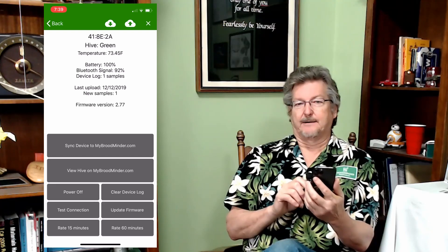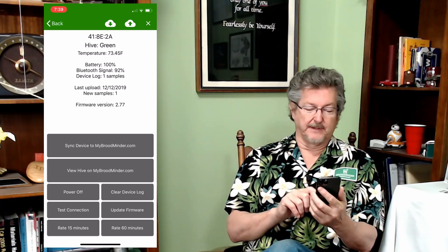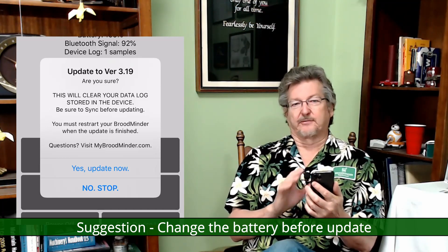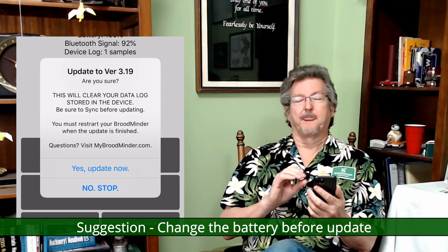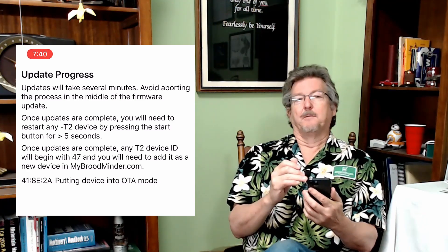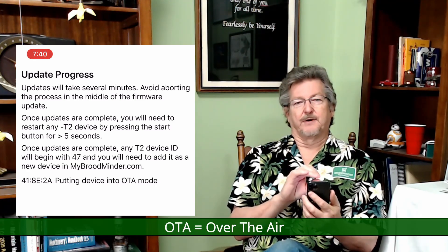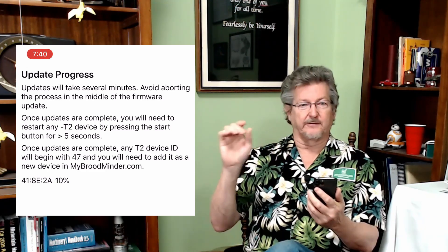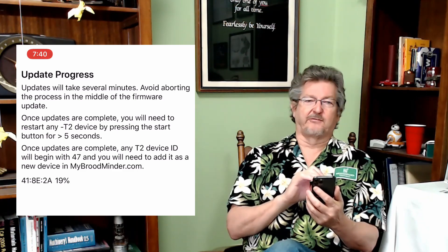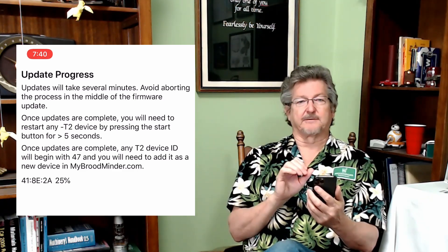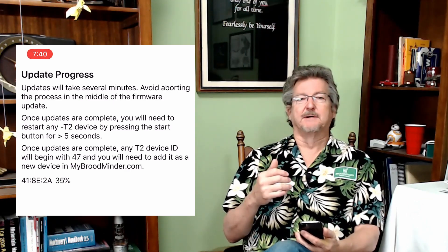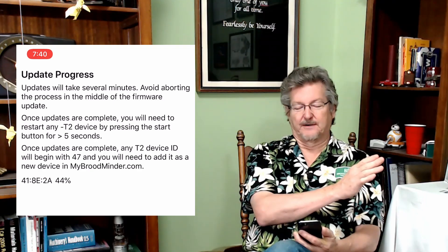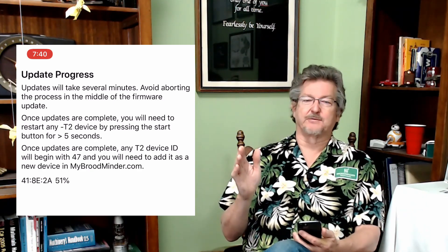What we're going to do right now is update the firmware. You see the update firmware button — I'm going to push it. It's going to warn me that once you do this, all the data stored in the device is going to go away. All the stuff that's in the cloud is safe and not a problem. The big thing to note is that after you update a T2, which has an ID of 41:XX:XX, it's going to change that number to 47 with the other four digits after it. We do that because we need to keep track of what is the SwarmMinder device — as we call them, which is the 47 — and the original T2s, which are the 41s.